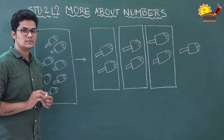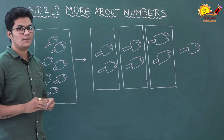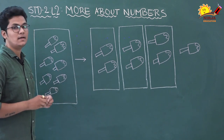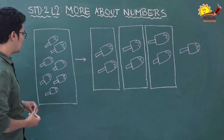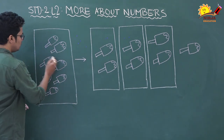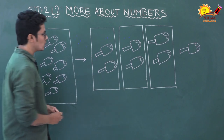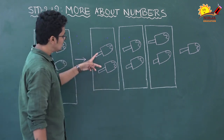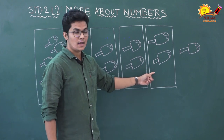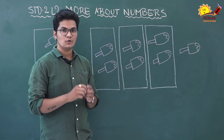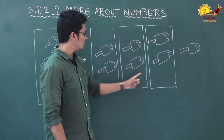Now let's divide all the ice creams into pairs — two ice creams in each group. One, two, three, four, five, six, seven ice creams. Let's make pairs: this is one pair with two ice creams, second pair, and third pair.